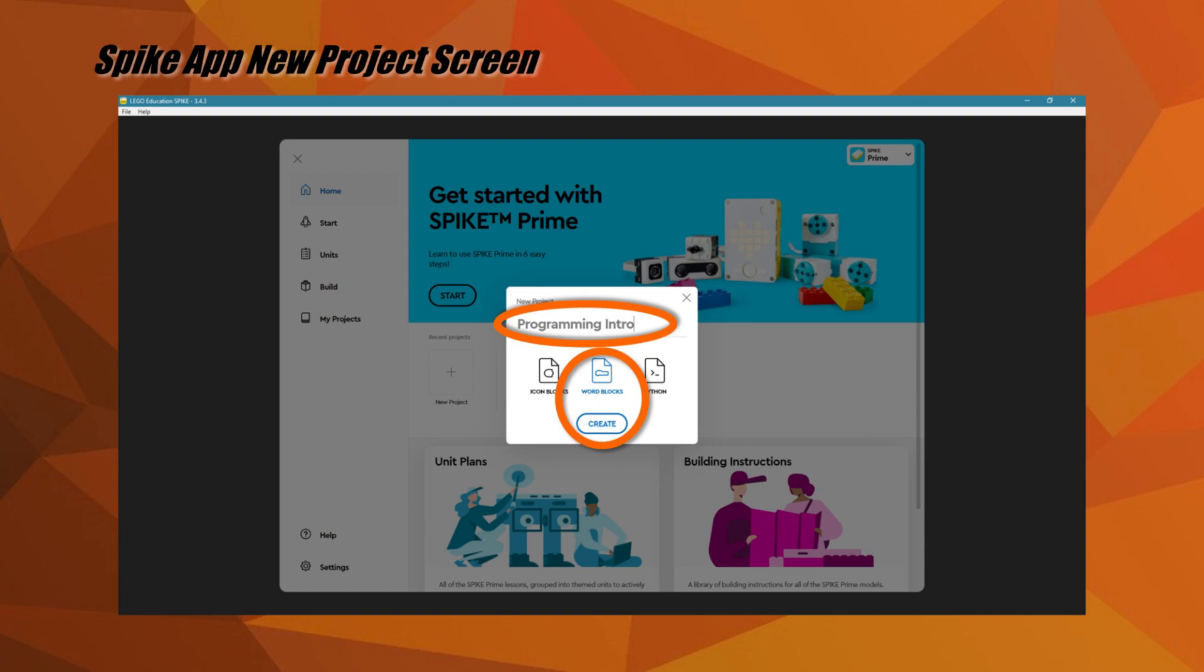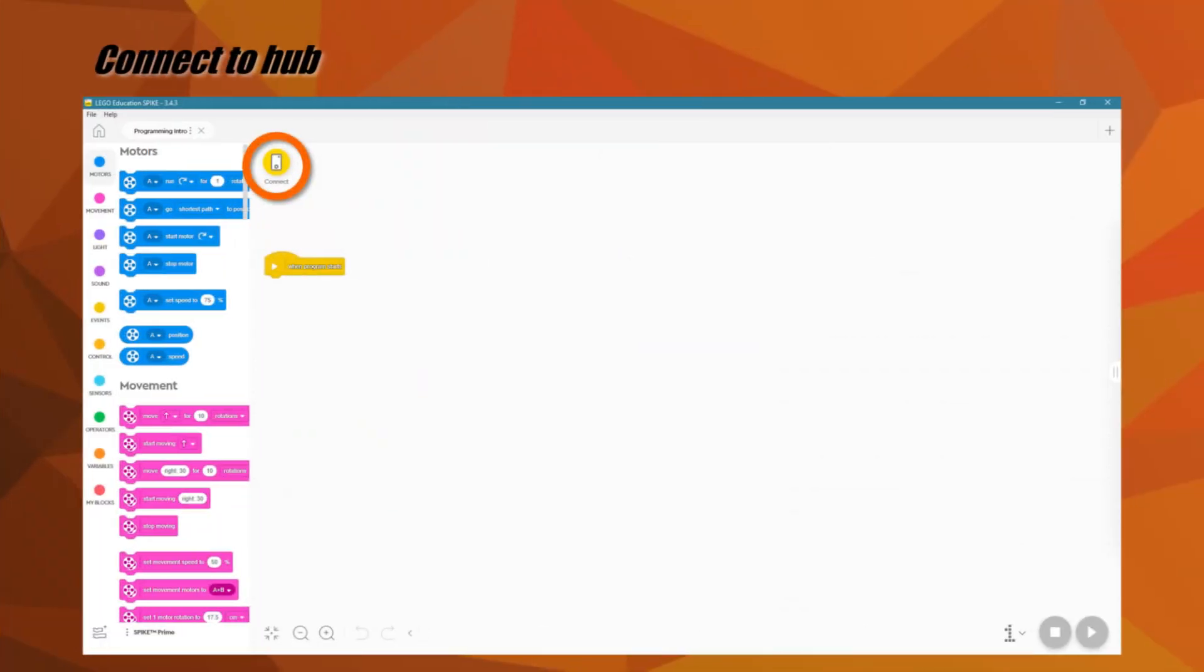Before you select Word Blocks, take a moment to rename your project. After selecting Word Blocks as your programming language, you will see the Word Blocks programming canvas. Now would be a good time to power up your Spike Prime robot and connect it to the app by clicking the yellow connect button with the hub icon in the top left of the programming canvas.